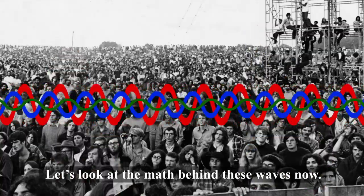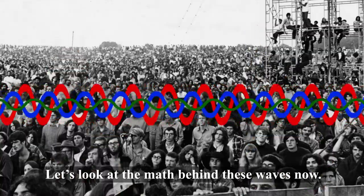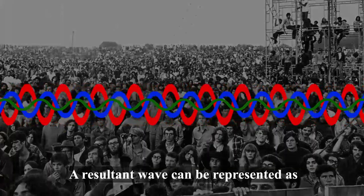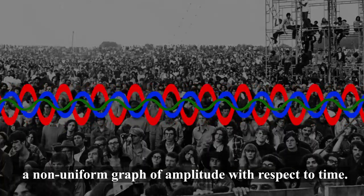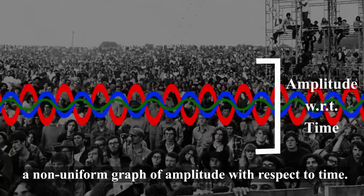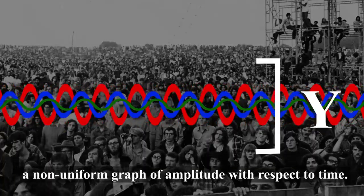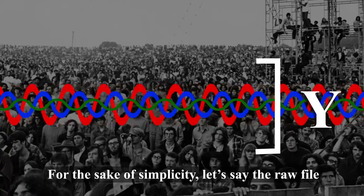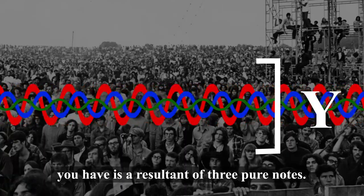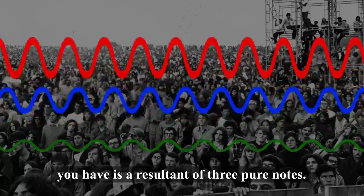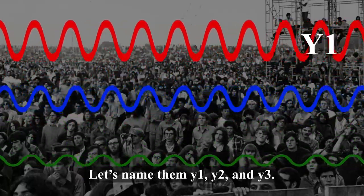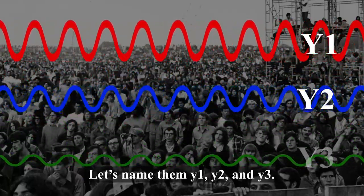Let's look at the math behind these waves now. A resultant wave can be represented as a non-uniform graph of amplitude with respect to time — let's call this Y. For the sake of simplicity, let's say the raw file you have is a resultant of 3 pure nodes: Y1, Y2, and Y3.